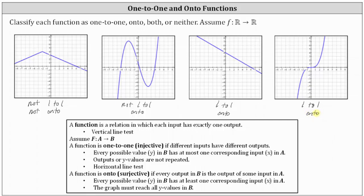More specifically, a function is onto or surjective if every output in B is the output of some input in A. Or we can say every possible y value in B has at least one corresponding input x in A. Because our function maps from real numbers to real numbers, the graph must hit all y values in order for there to be at least one corresponding input or x.